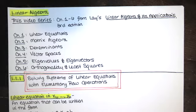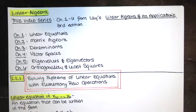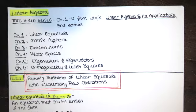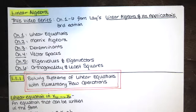Most institutions that use this book cover chapters one through six. So I'm going to do a video series over those chapters. Chapter one covers linear equations — it starts off a little slow, but things get more interesting toward the end. Chapters two and three cover matrix algebra and determinants. Chapter four is about vector spaces, chapter five is about eigenvalues and eigenvectors, and chapter six deals with orthogonality and least squares.